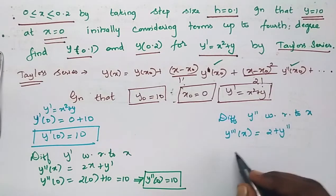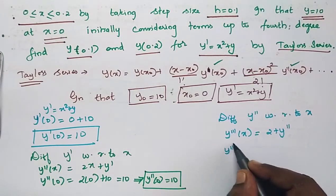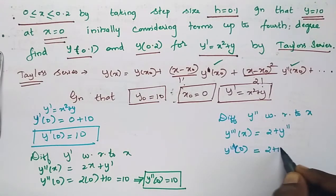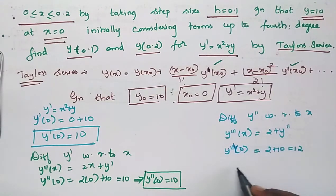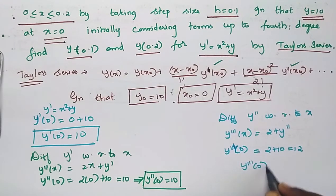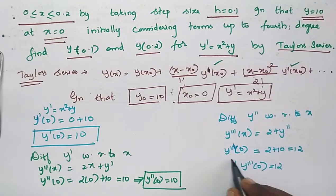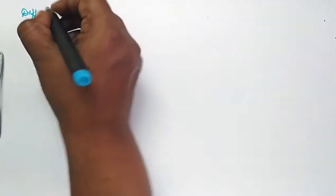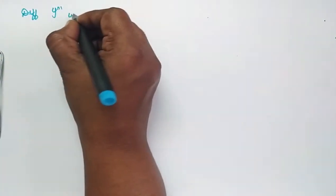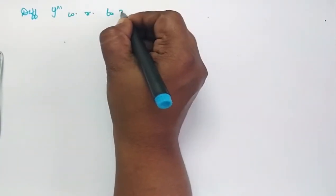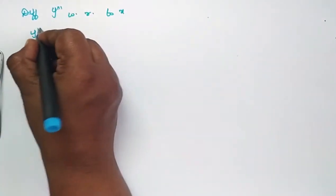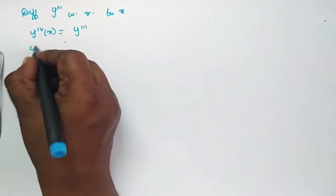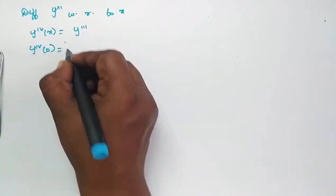Differentiating y'' gives y''' = 2 + y''. So y'''(0) = 2 + 10 = 12. Differentiating y''' with respect to x gives y⁴ = y''', so y⁴(0) = 12.